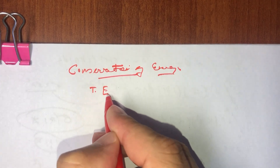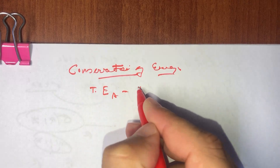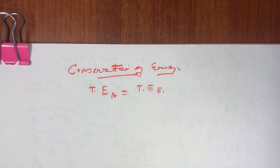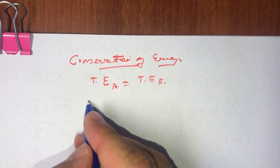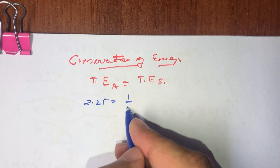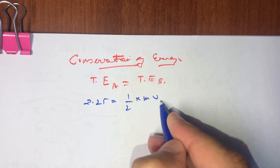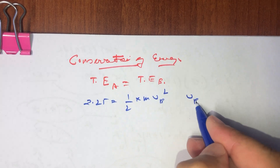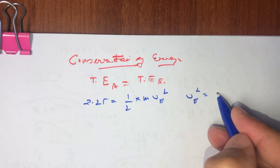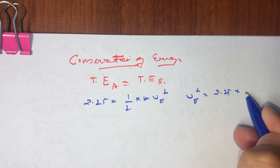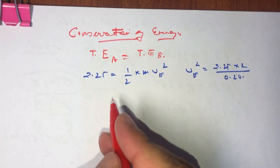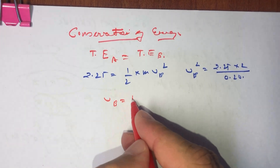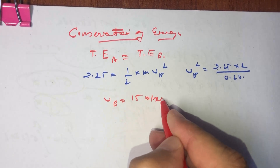Using conservation of energy, total energy at A equals total energy at B. Total energy at A is 2.25 joules, and total energy at B is half m v_b squared. From this, v_b squared equals 2.25 times 2 divided by 0.20. Therefore, the velocity at point B comes out as 15 meters per second.